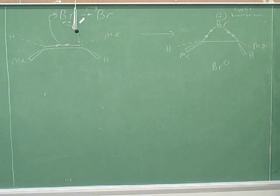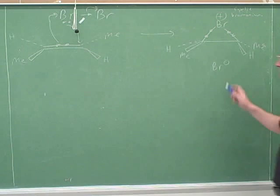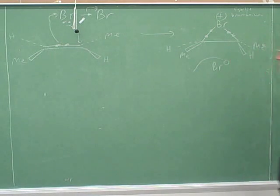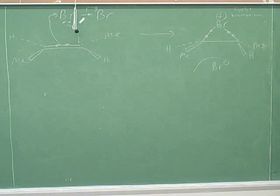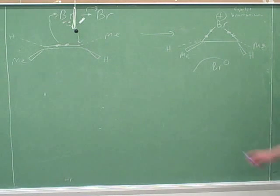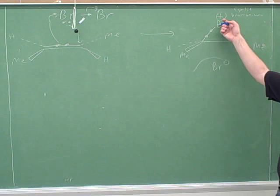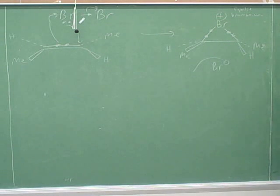Is there anybody in our mix here that would be reasonable? The Br⁻ ion. Yeah, the Br⁻. And who would be reasonable to put in a head? The positive bromine. That seems reasonable. So you want to use this bromine as the electrophile. Now it turns out that's actually not how this works.